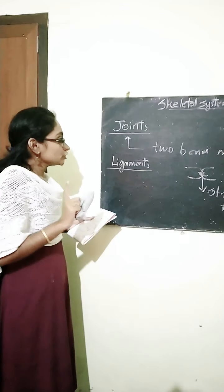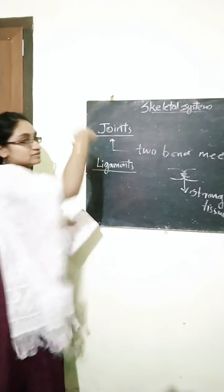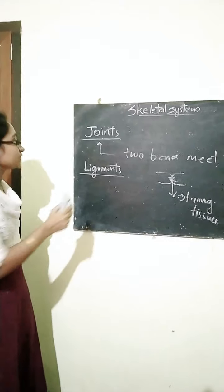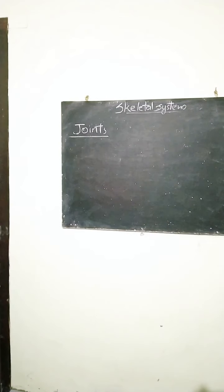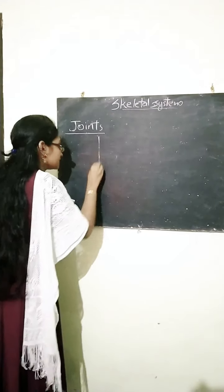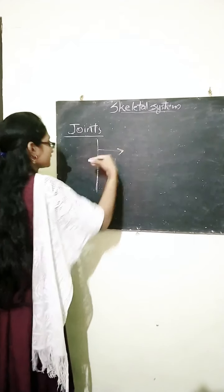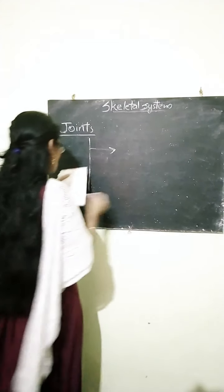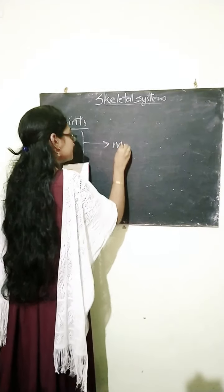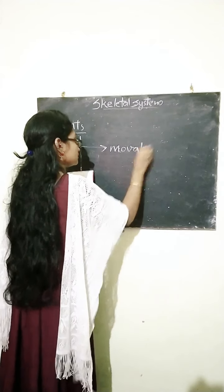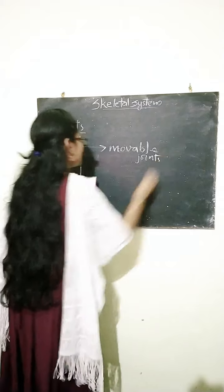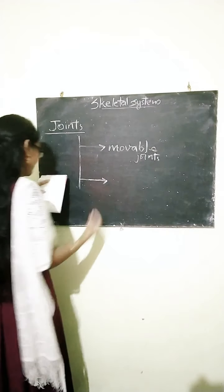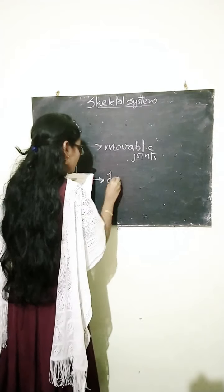There are generally two types of joints. The first one is movable joints, and the second one is immovable joints.